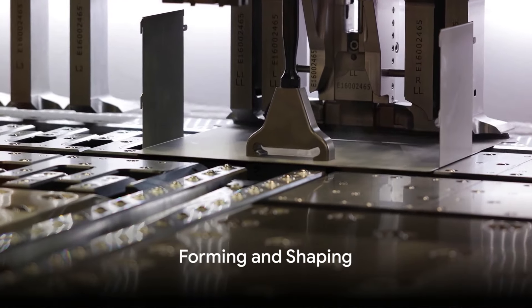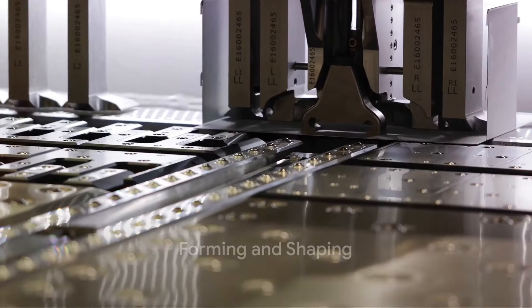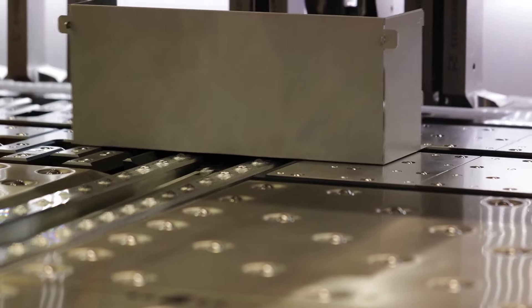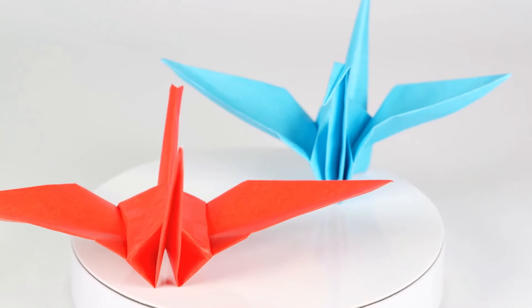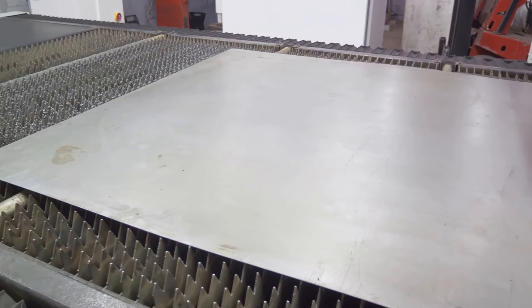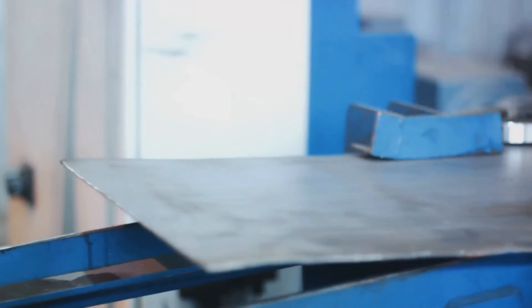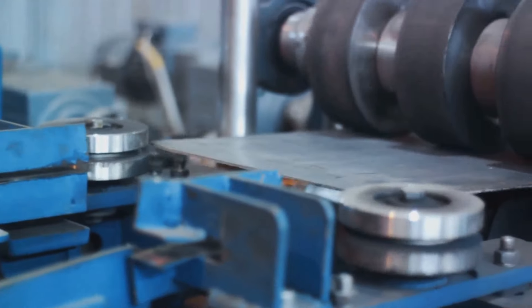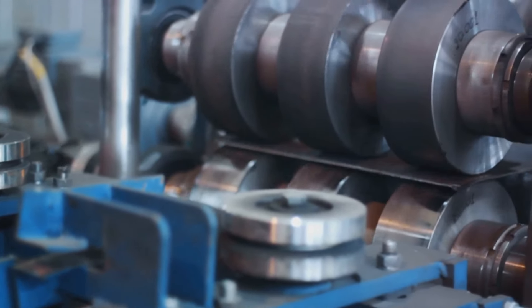Once the metal has been expertly cut and shaped, it's time for it to take on a three-dimensional form. This is where CNC bending comes into play. Like a seasoned origami artist, the machine folds the metal to the desired shape, creating a structure that is both strong and aesthetically pleasing.